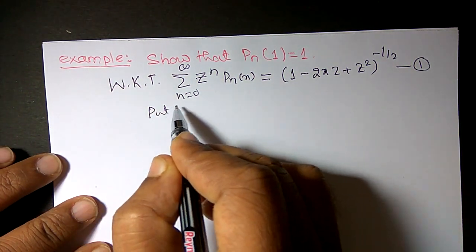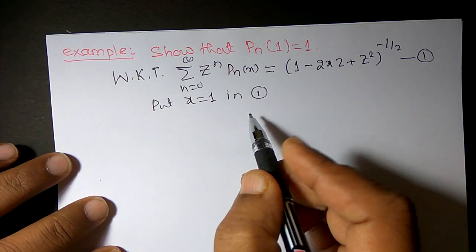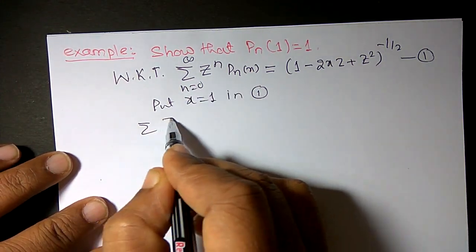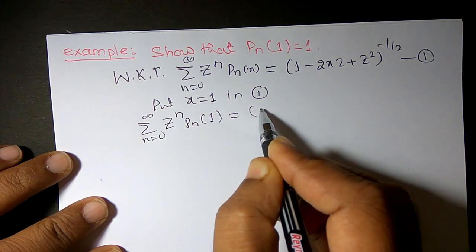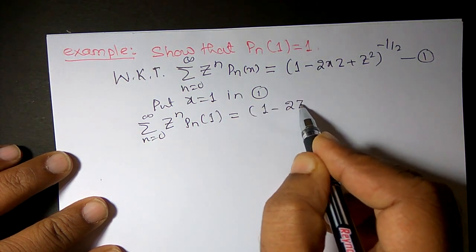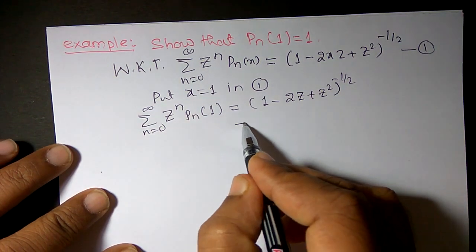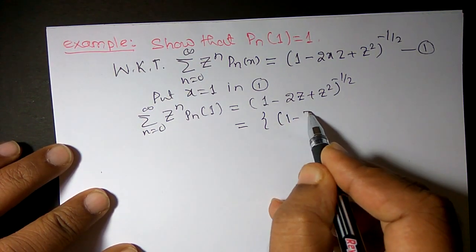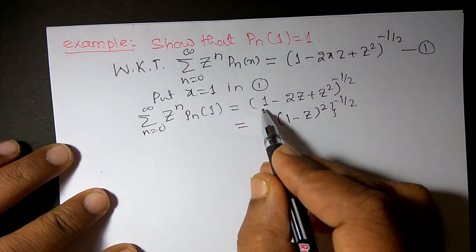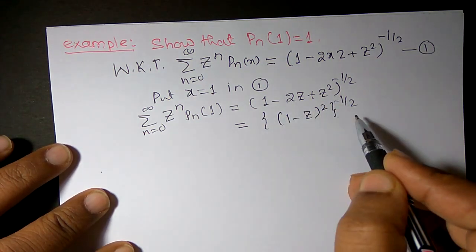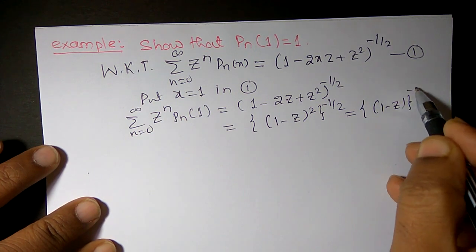Now I will replace x by 1 in equation 1. So I can obtain summation of z^n, n varies from 0 to infinity, P_n(1) = (1 - 2z + z²)^(-1/2). This can be written as (1 - z)² to the power of minus 1/2, since 1 - 2z + z² = (1 - z)². So the same thing can be written as (1 - z)^(-1).